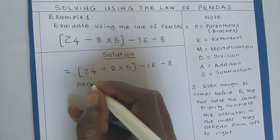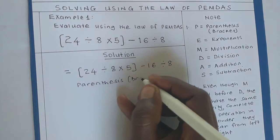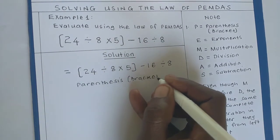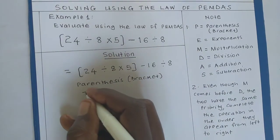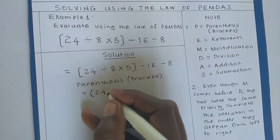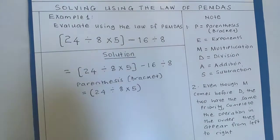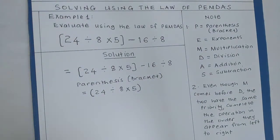The term inside the bracket: we have 24 ÷ 8 × 5. But remember, division is appearing before multiplication. So what we need to do,